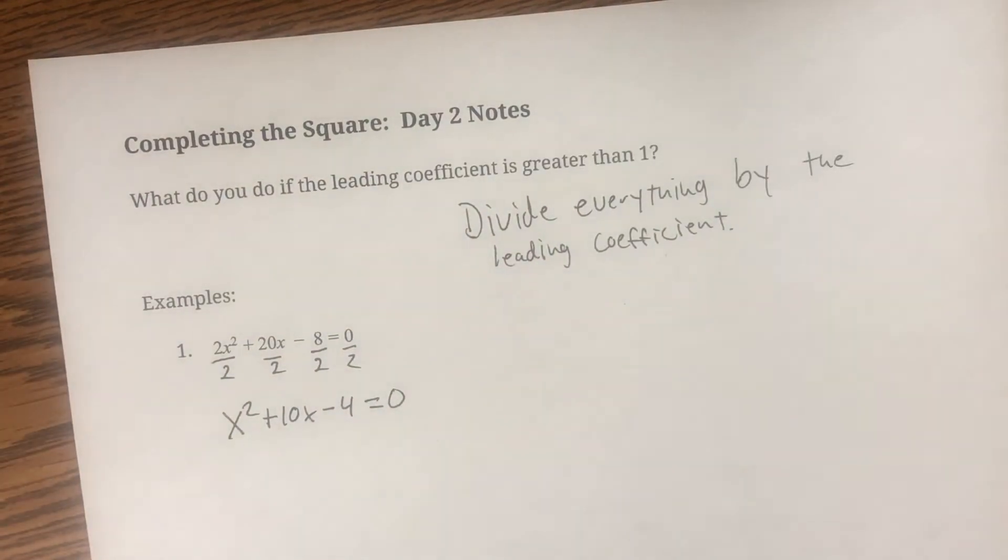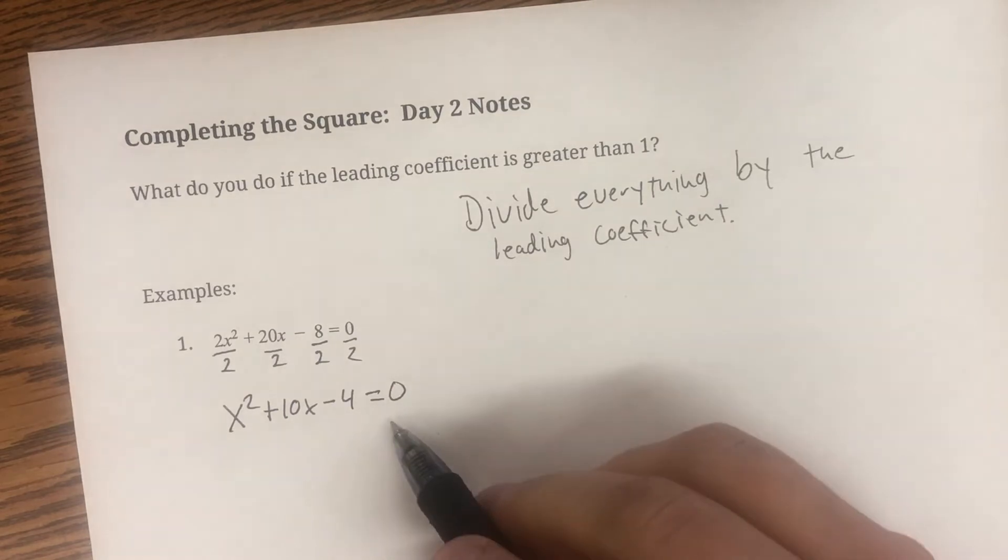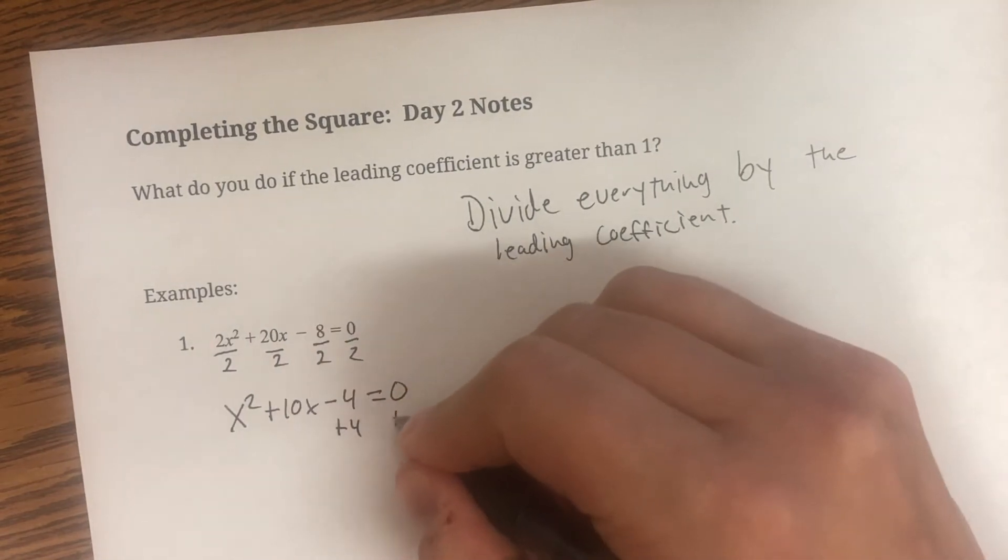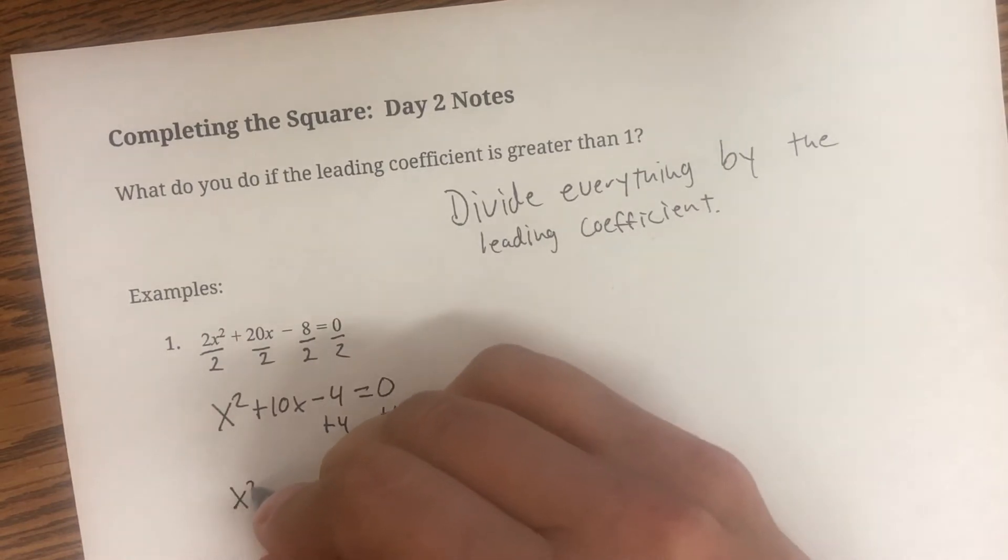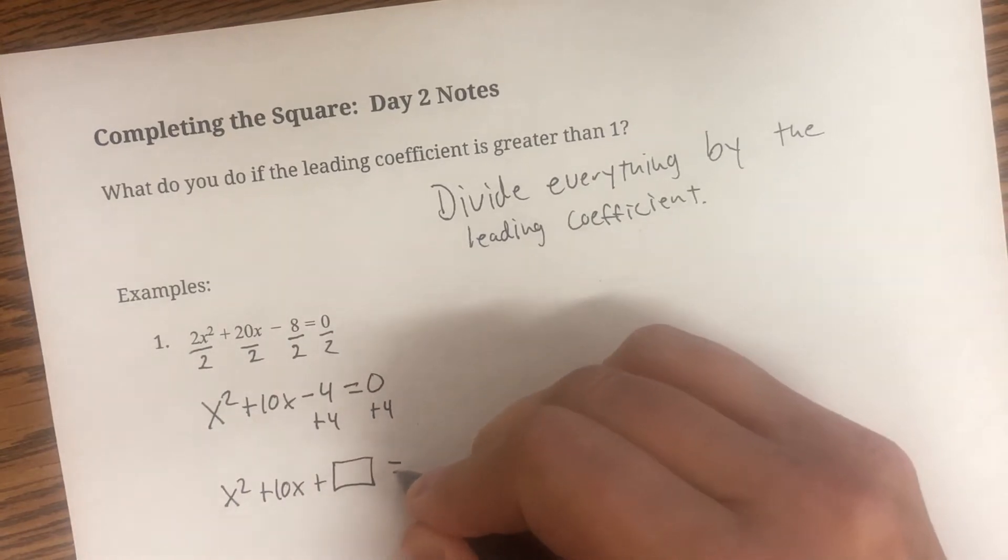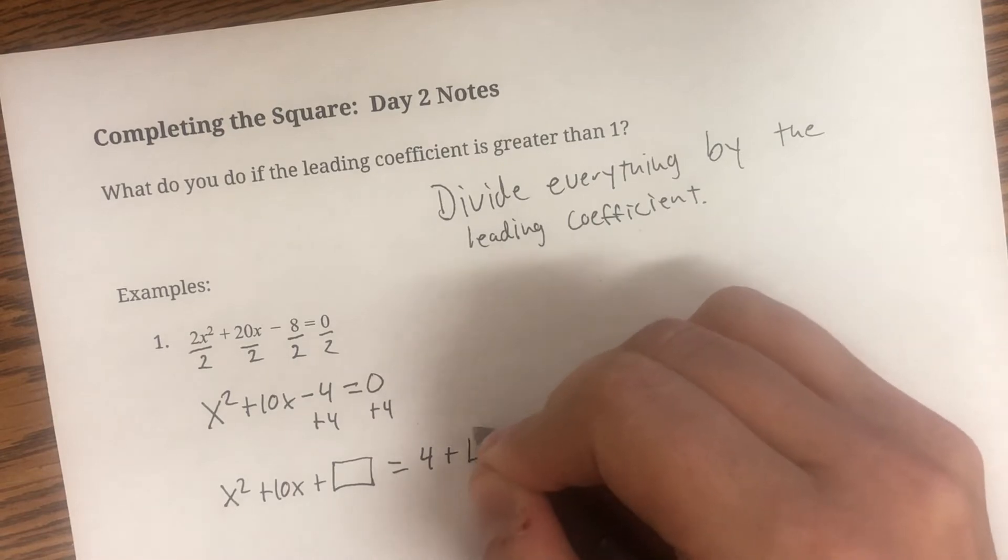So now our process, keep in mind, we want to get this constant term over to the other side. So we are going to add four to both sides. x squared plus 10x plus our box, that's what we're going to complete the square, equals four plus our box.